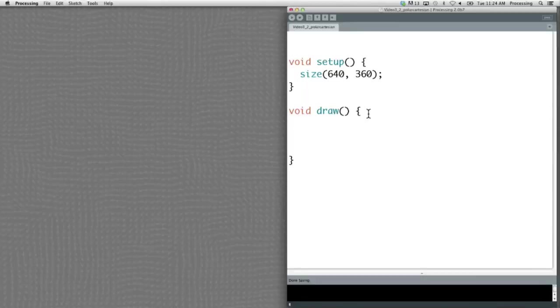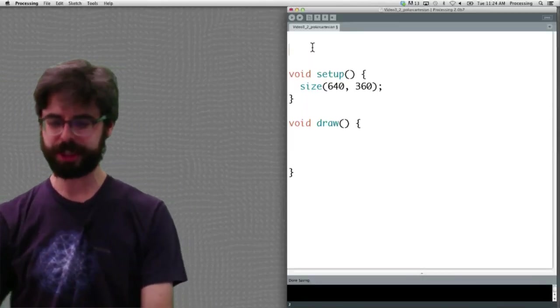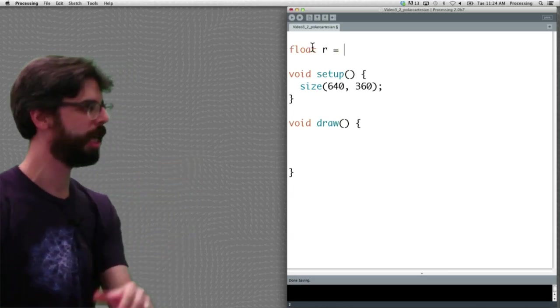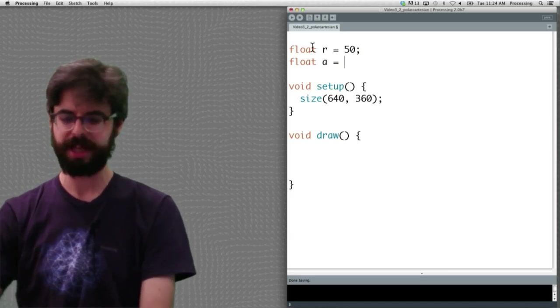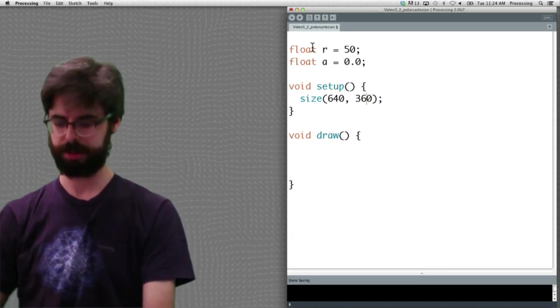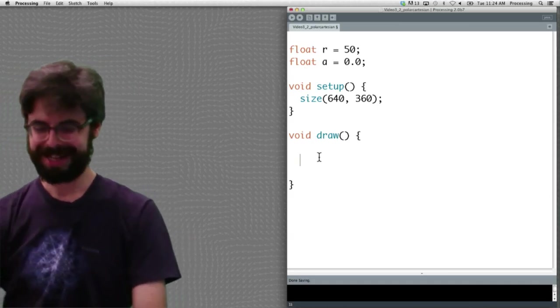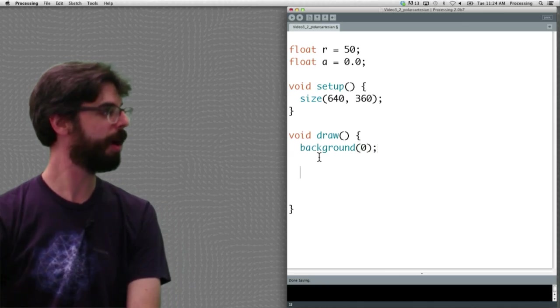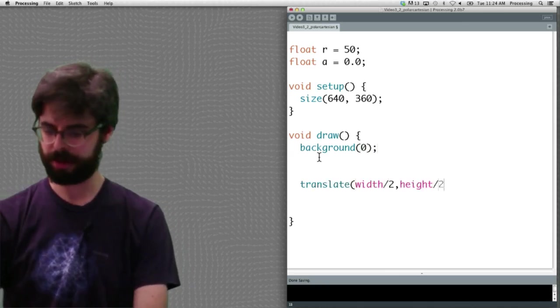Over here. Okay, hello again. Now we're over here. Okay, so let's just say we're going to have some global variable called r. r in this case, let's say it's going to be 50. And we're going to have some angle, I'm just going to call it a, which is going to be 0. Okay, now I'm going to make a black background.